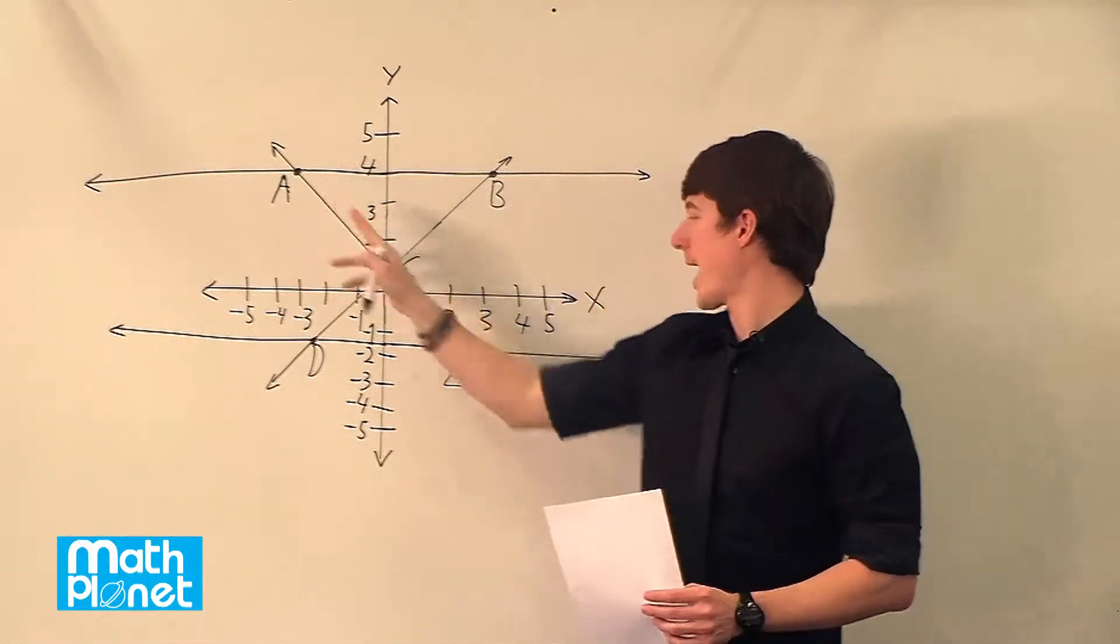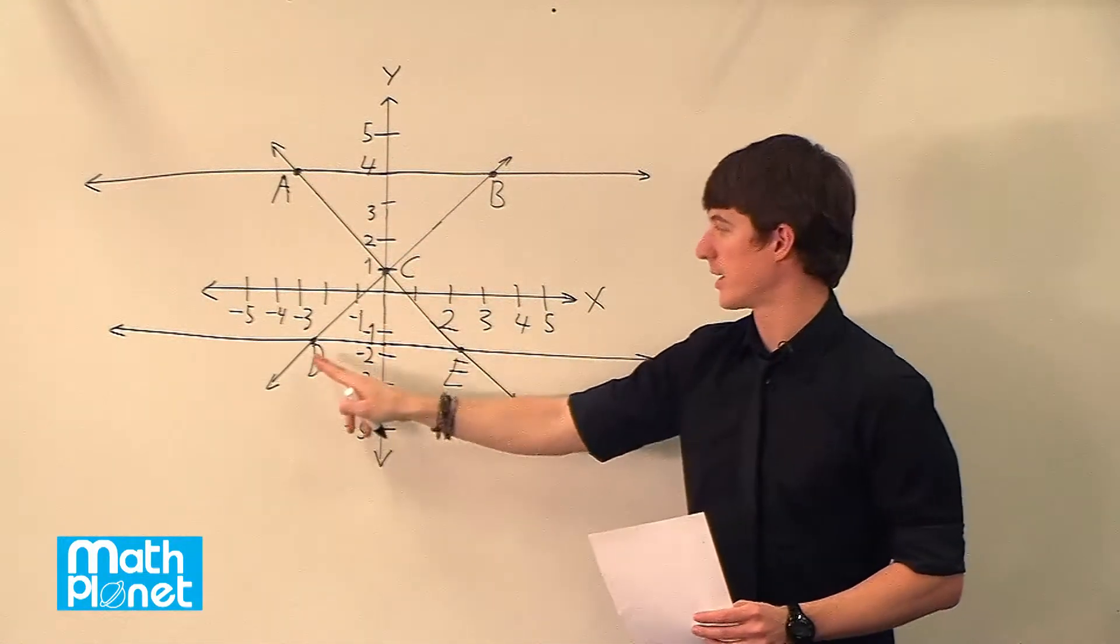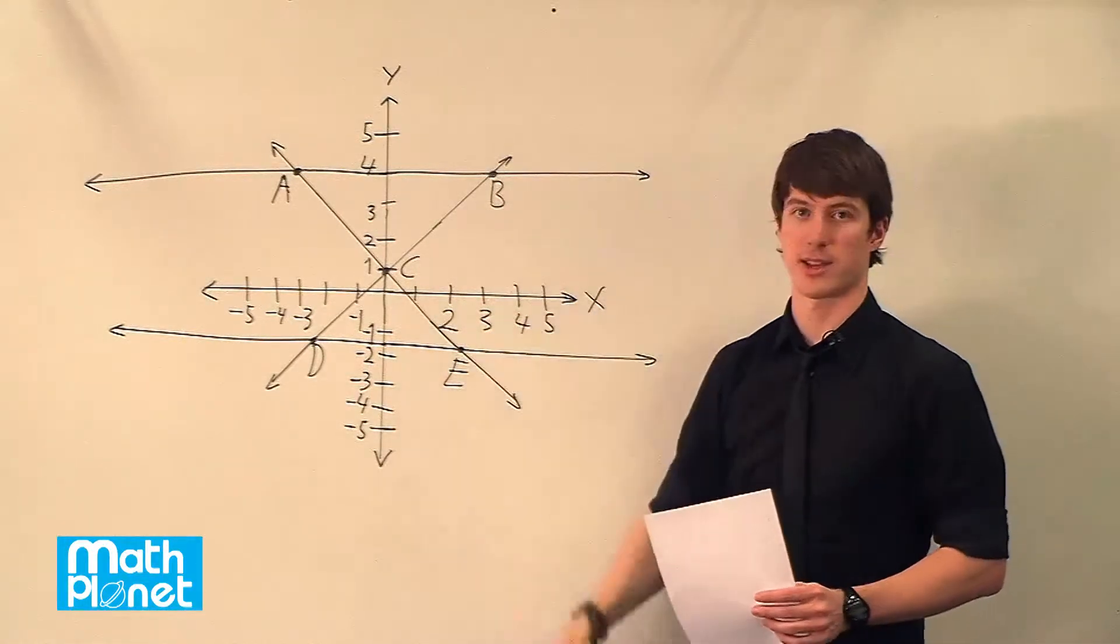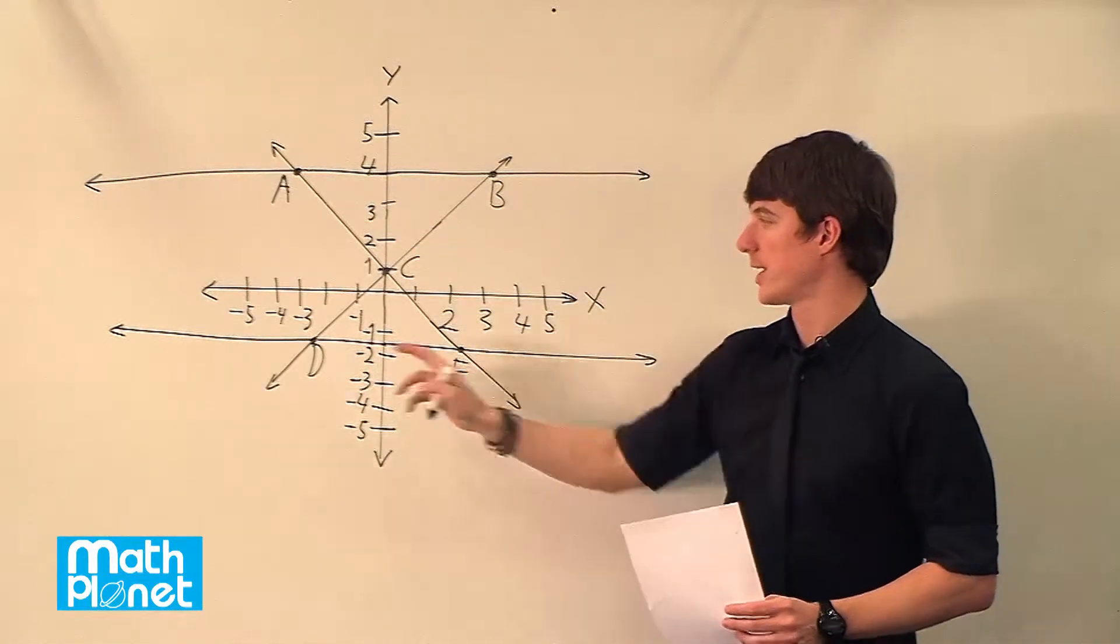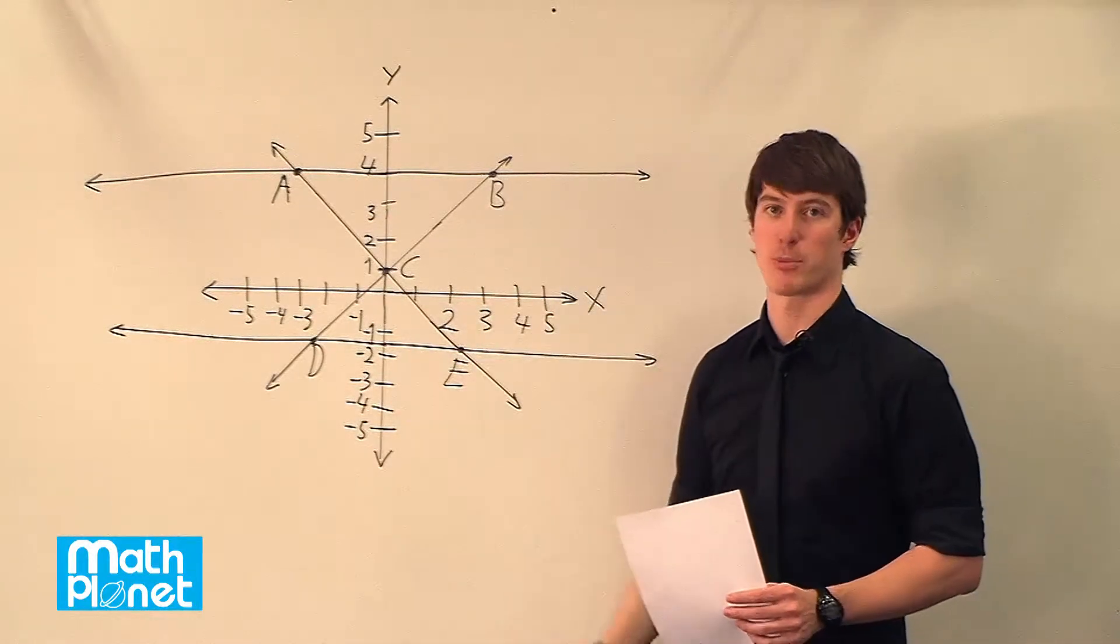So here we have line AE and line DB intersecting at C. So line AE and DB are perpendicular.